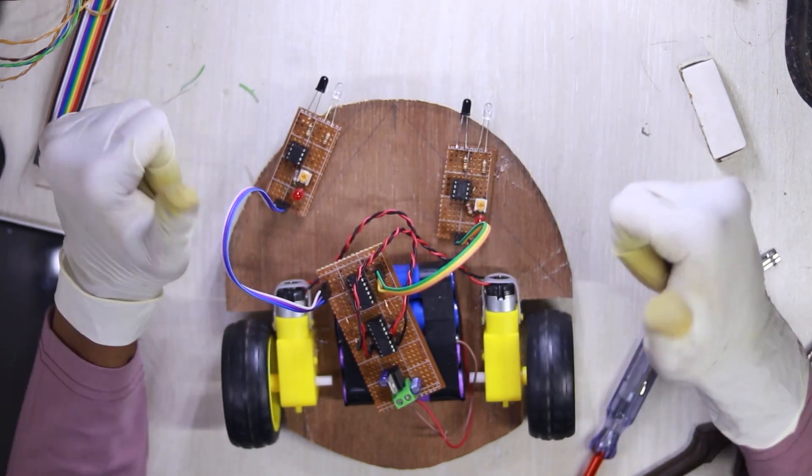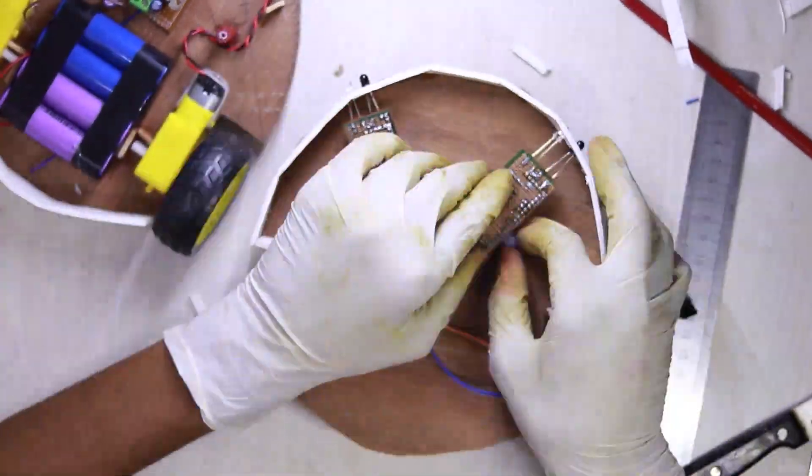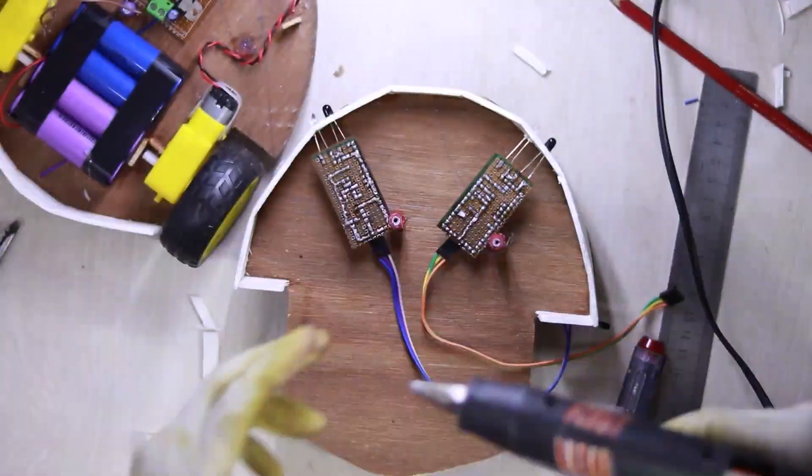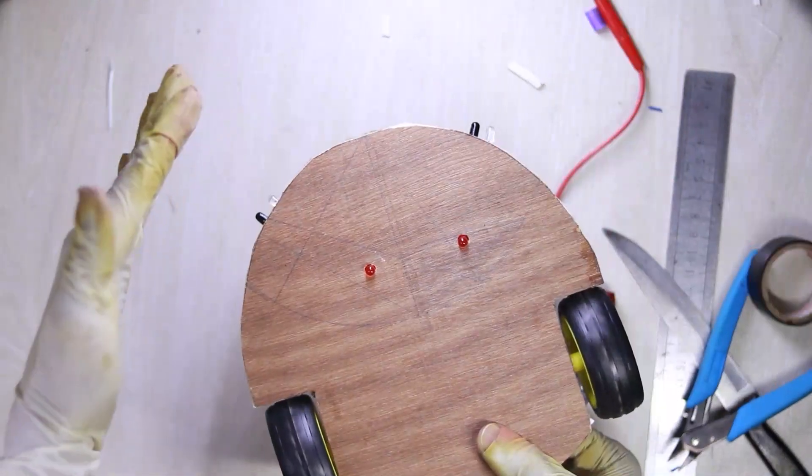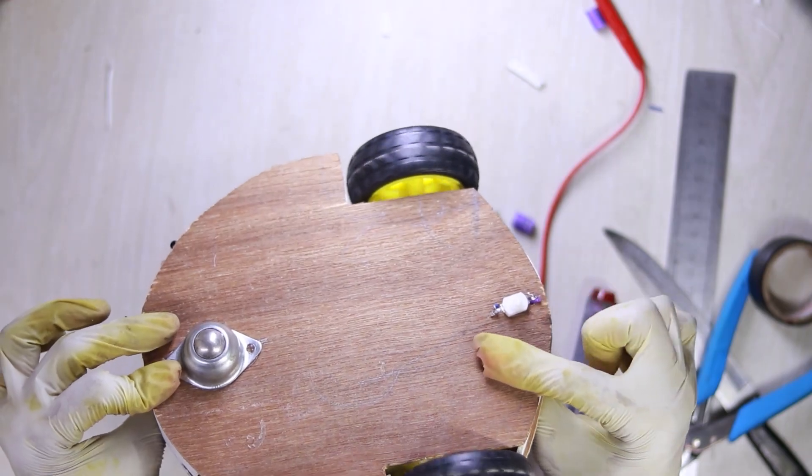If both sensors get an obstacle, the robot will turn backward. Let's finish up making the robot. The outlook is beautiful. Thank you for watching!